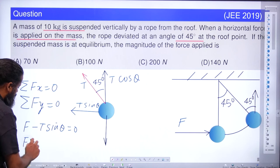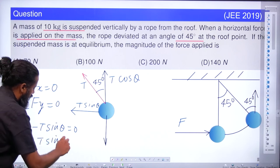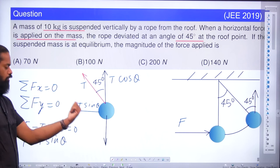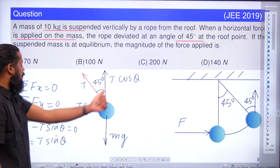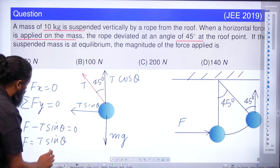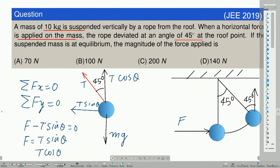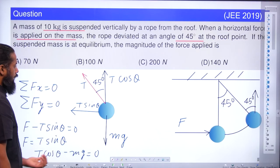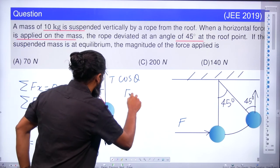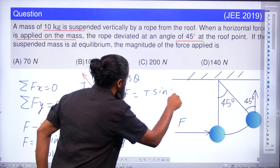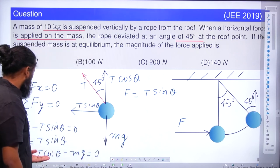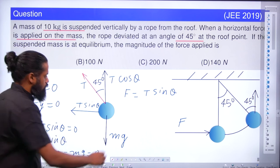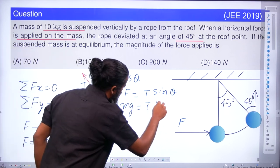Therefore F equals T sine theta. Similarly, in the vertical direction, the downward weight mg is balanced by T cos theta in the positive y direction, so T cos theta minus mg equals 0. This gives two equations: first, F equals T sine theta; second, mg equals T cos theta.